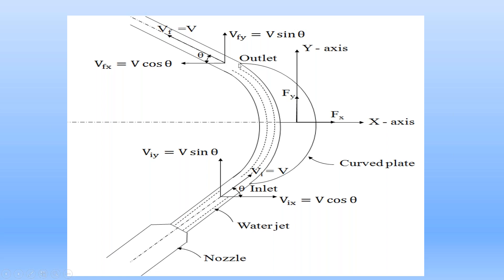At outlet, the water jet leaves the curved plate with the same velocity V in the tangential direction — that is taken as the final velocity Vf. Before striking, the initial velocity Vi equals V in the tangential direction, making angle theta with horizontal. The final velocity Vf also equals V in the tangential direction, making the same angle theta with horizontal, because both initial and final velocities are in the tangential direction.